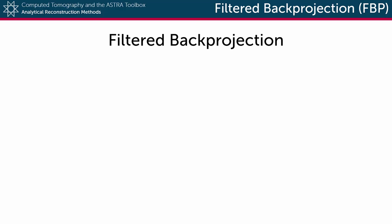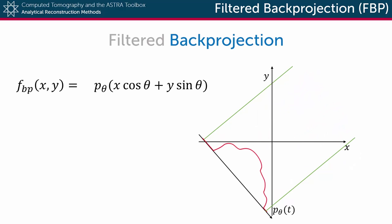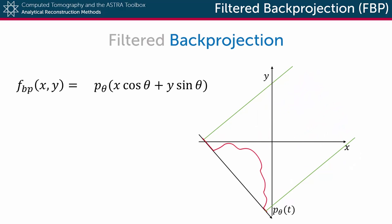FBP involves two phases: a filtering and a back projection phase. We'll firstly discuss the back projection. This operation more or less resembles the inverse operation of a forward projection, but instead of each detector getting the line integral of the object function, now each point on the object domain receives the value of the detector point where it projects to. In essence, the detector function is smeared out over the object domain. This is then done over all projection angles, summing up the values from each direction.